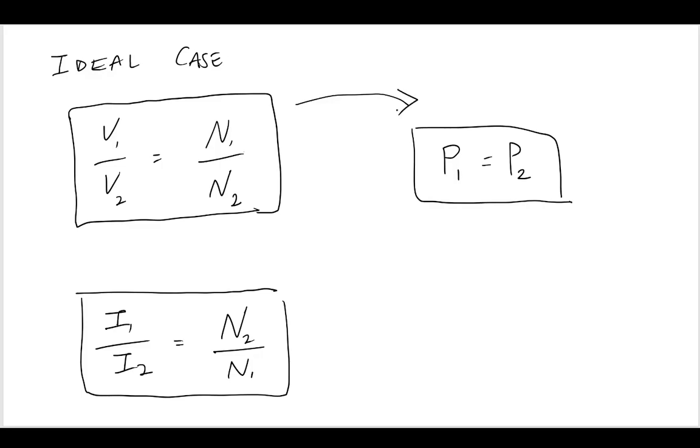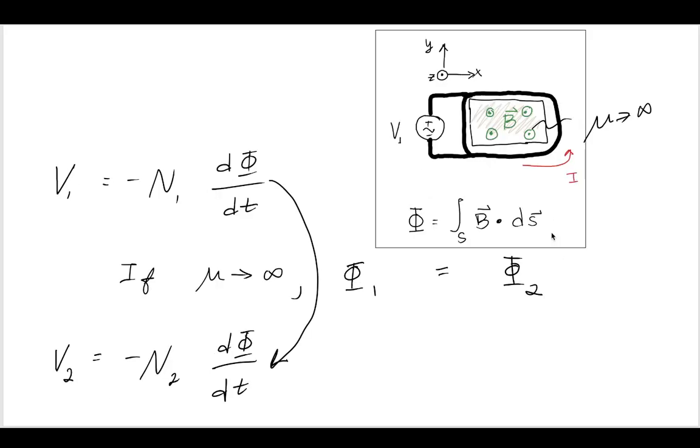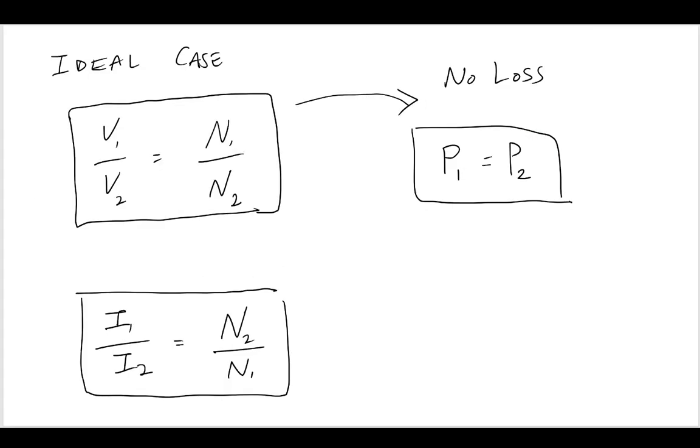In the ideal case if there is no loss, this means that the power in coil one is equal to the power in coil two due to this very strong flux linkage condition, which furthermore leads to this relationship between the currents.